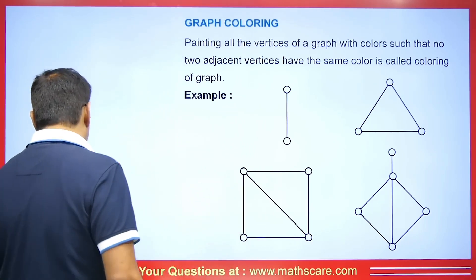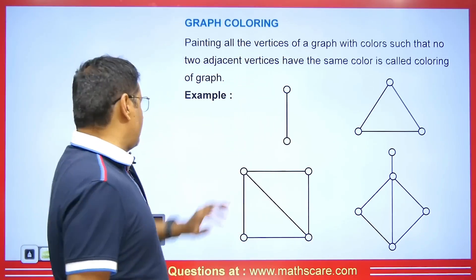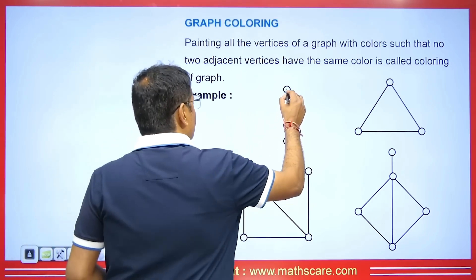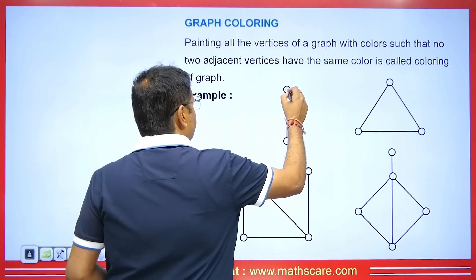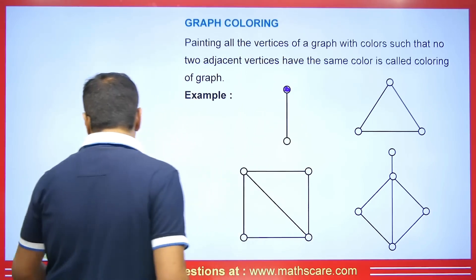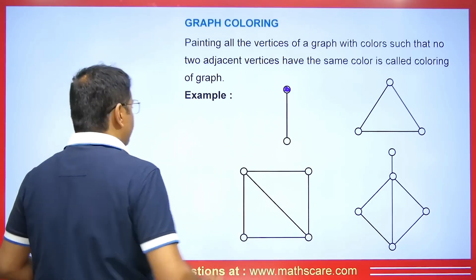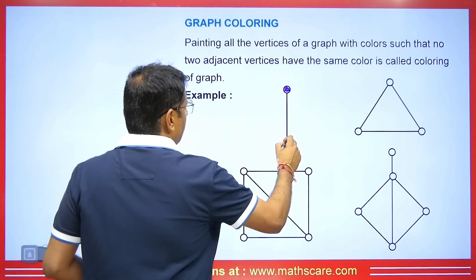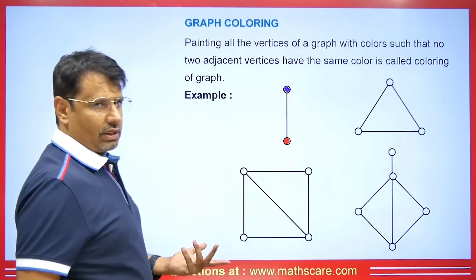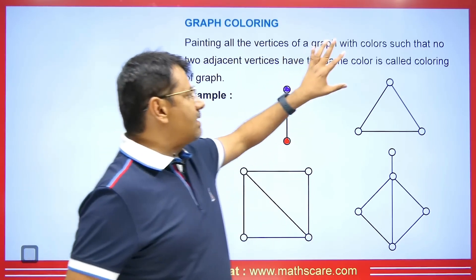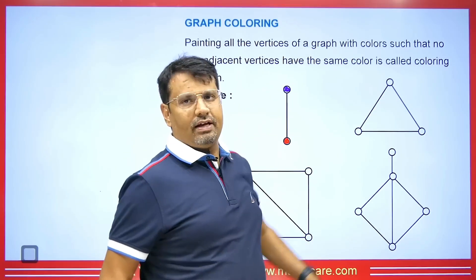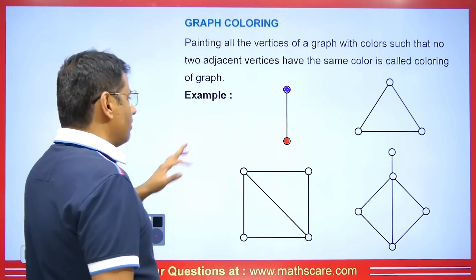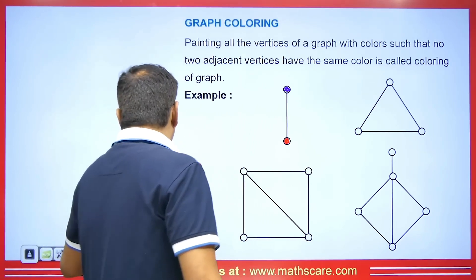If I have to color this graph, I will color one endpoint in purple and the second end in red. So how many colors am I using? I am using two colors. We have a complete graph here — within this graph, how many colors can I use? Pay attention here.